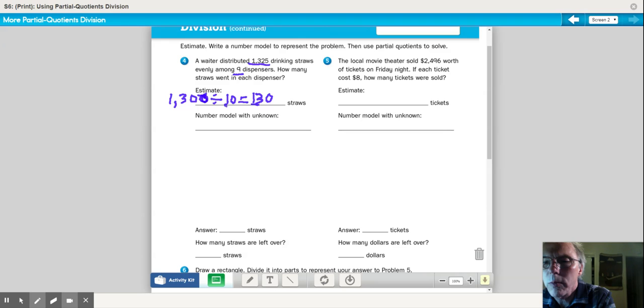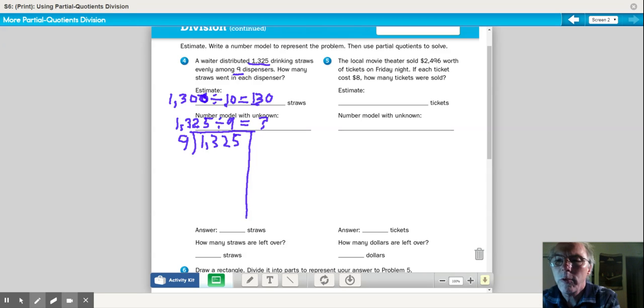Now, the number model with the unknown. Well, you just write the problem. 1,325 divided by nine dispensers. So we've got nine dispensers. How many straws will go into each one? We don't know yet. We'll find out. Next, we write the problem down like a division problem. 1,325. And we're going to find nine equal parts. And then what we do is we draw this line down here because we're going to be doing partial products. We're going to get part answers, and then we're going to add them up. So first off, what times nine will get rid of as much of this 1,325 as possible?